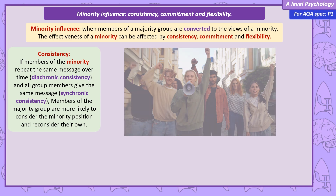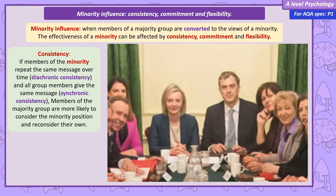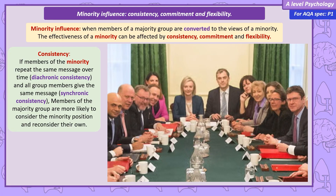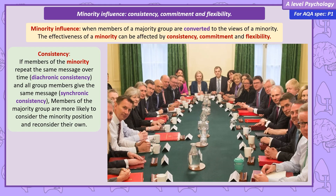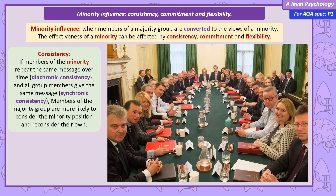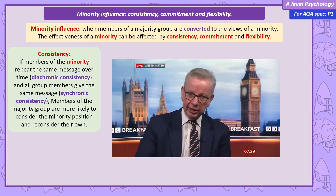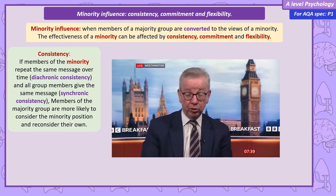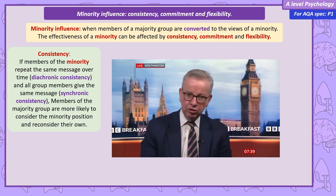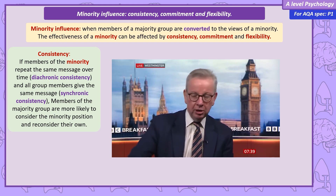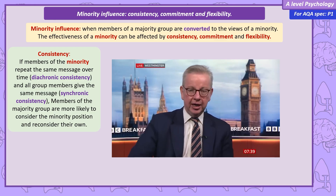As an example of synchronic consistency, you can think of government ministers. They are a minority group that tries to influence the majority — the voting public. All government ministers have to follow what's known as the party line: they all agree to have the same public opinion on important issues, even if they don't privately agree. Synchronic consistency makes them seem more united as a group, and more convincing than they would be if they were all disagreeing with each other.